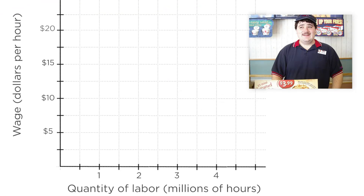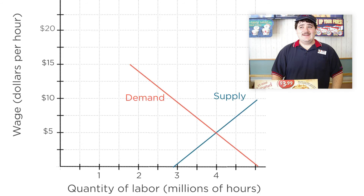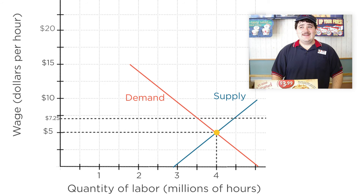Now let's turn to fast food cashiers. Again, we have a supply of individuals who could provide labor hours to the market, and we have a demand for these people by fast food restaurants who need workers to staff their stores. Given these examples of supply and demand curves, the equilibrium for this market is 4 million hours of work at a wage of $5 an hour. So what happens in this case if the government comes in and imposes a minimum wage of $7.25? The equilibrium at $5 an hour is no longer legal. So what will the restaurants' demand for workers be at the new wage of $7.25?